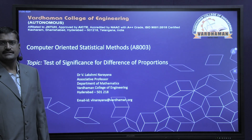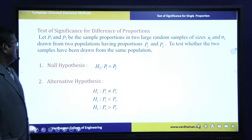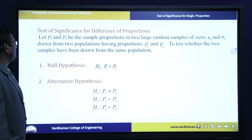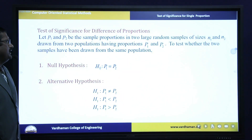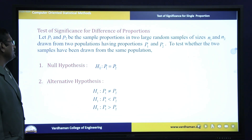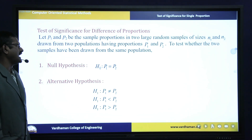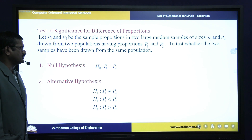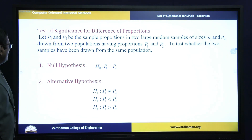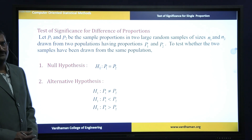We can also call this the Z-test for difference of proportions. Under this, let P1 and P2 be the sample proportions in two large random samples of sizes N1 and N2, drawn from two populations having the proportions P1 and P2. We aim to test whether the two samples have been drawn from the same population.